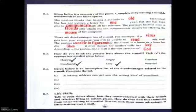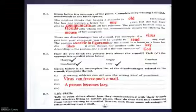B6: given below is an incomplete list of disadvantages related to email — complete the list. A wrong address can get you the wrong kind of mail. Now think of the others: a virus can freeze one's email; a person becomes lazy; one receives hundreds of useless emails.